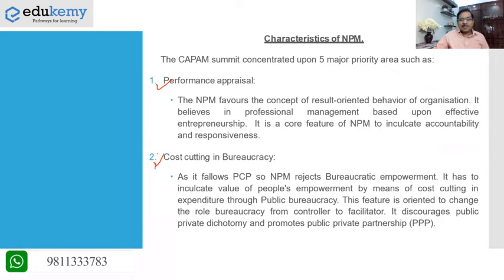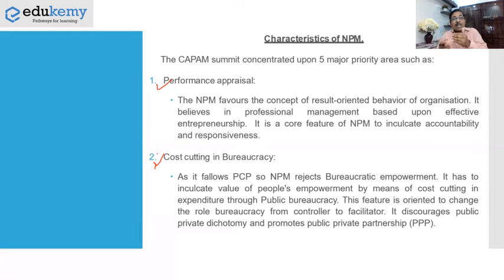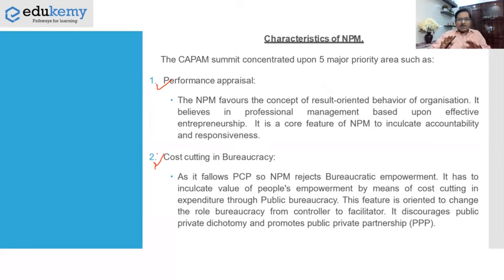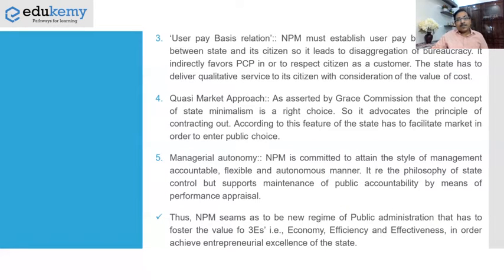The second feature is cost cutting in bureaucracy. We should not make investment upon public agencies but instead create contracting-out and alternative mechanisms. For example, to build a road, earlier you needed a PWD — Public Works Department — but now you outsource to a construction company. These are the factors for cost cutting in bureaucracy.